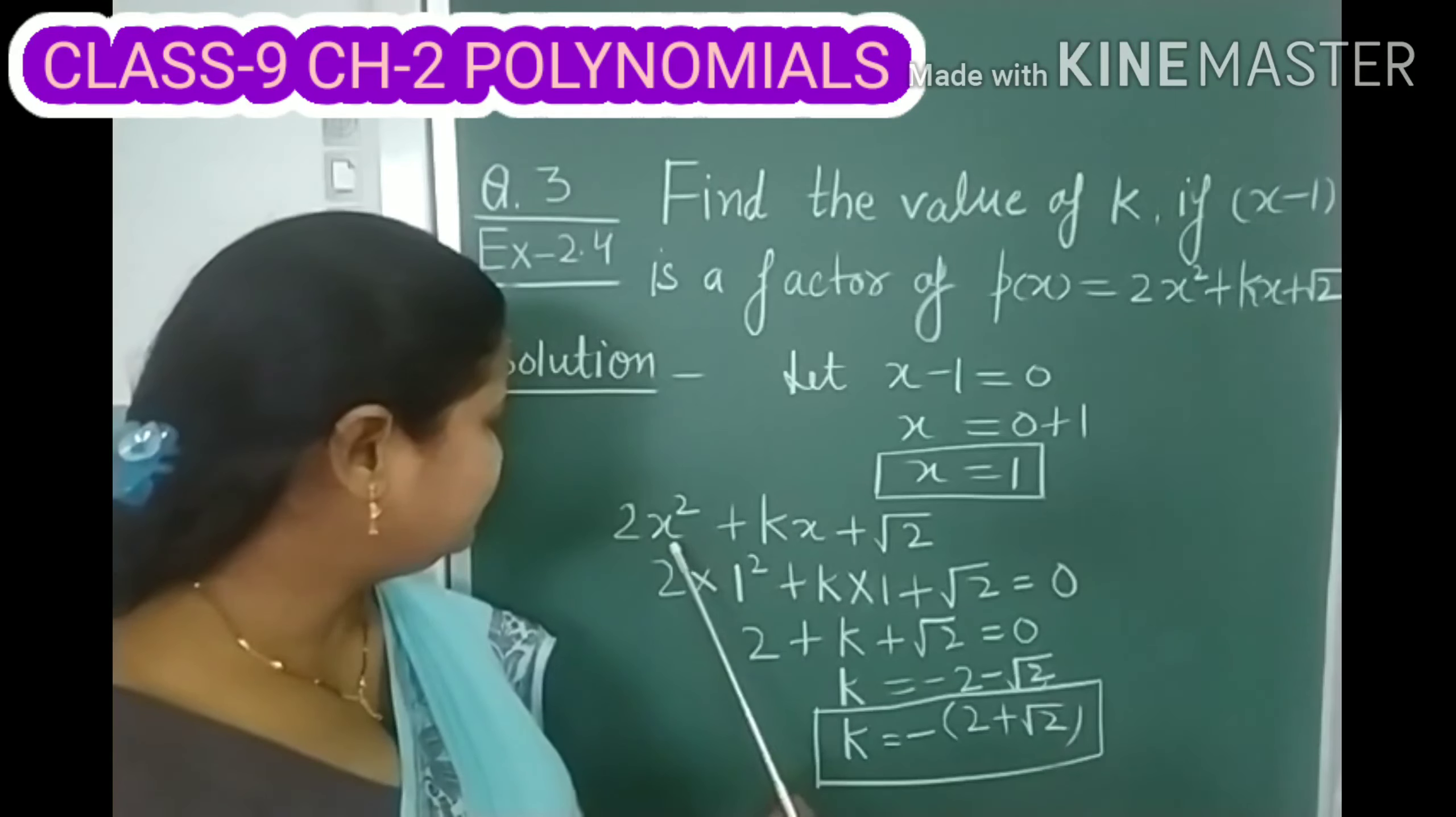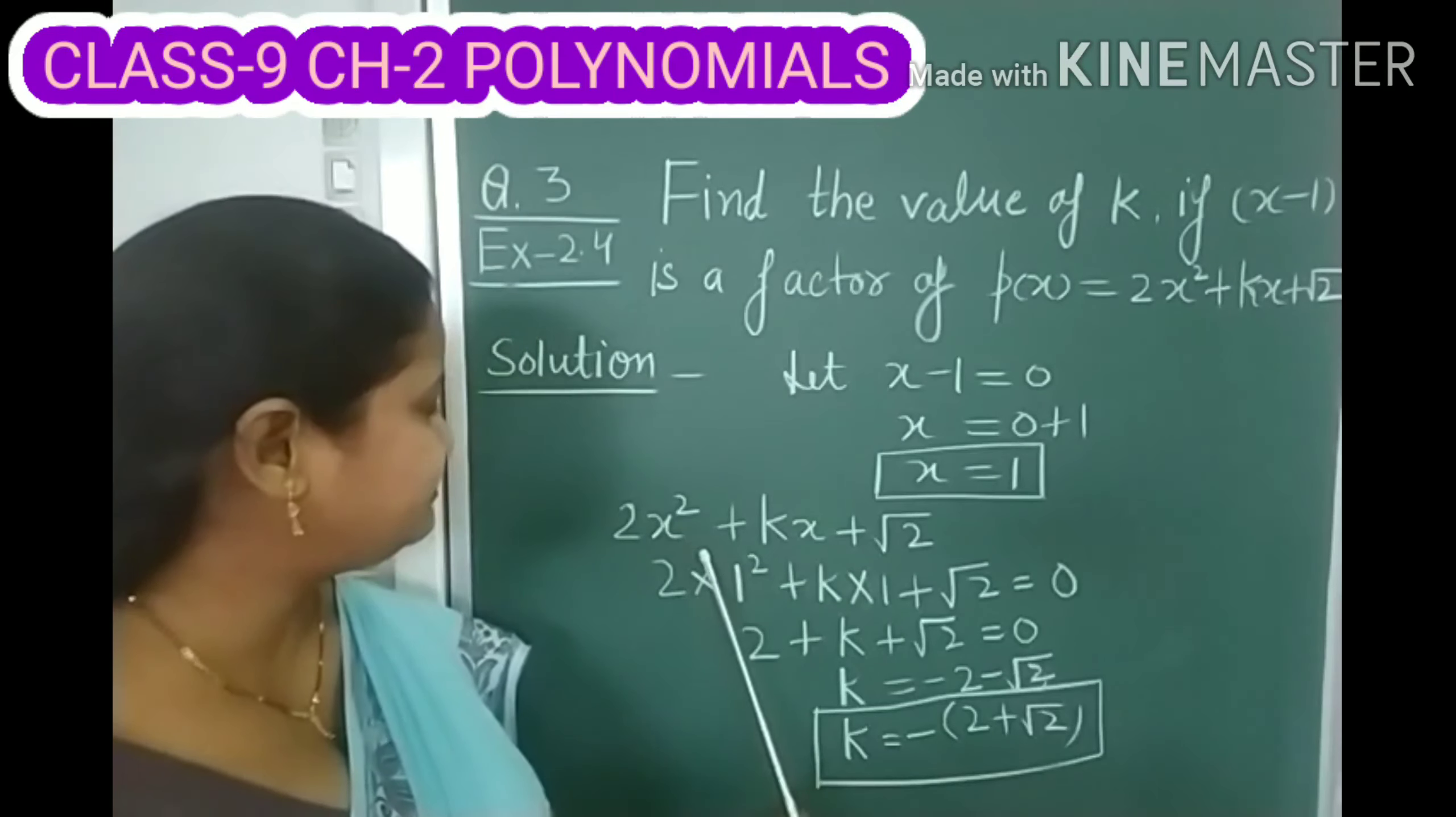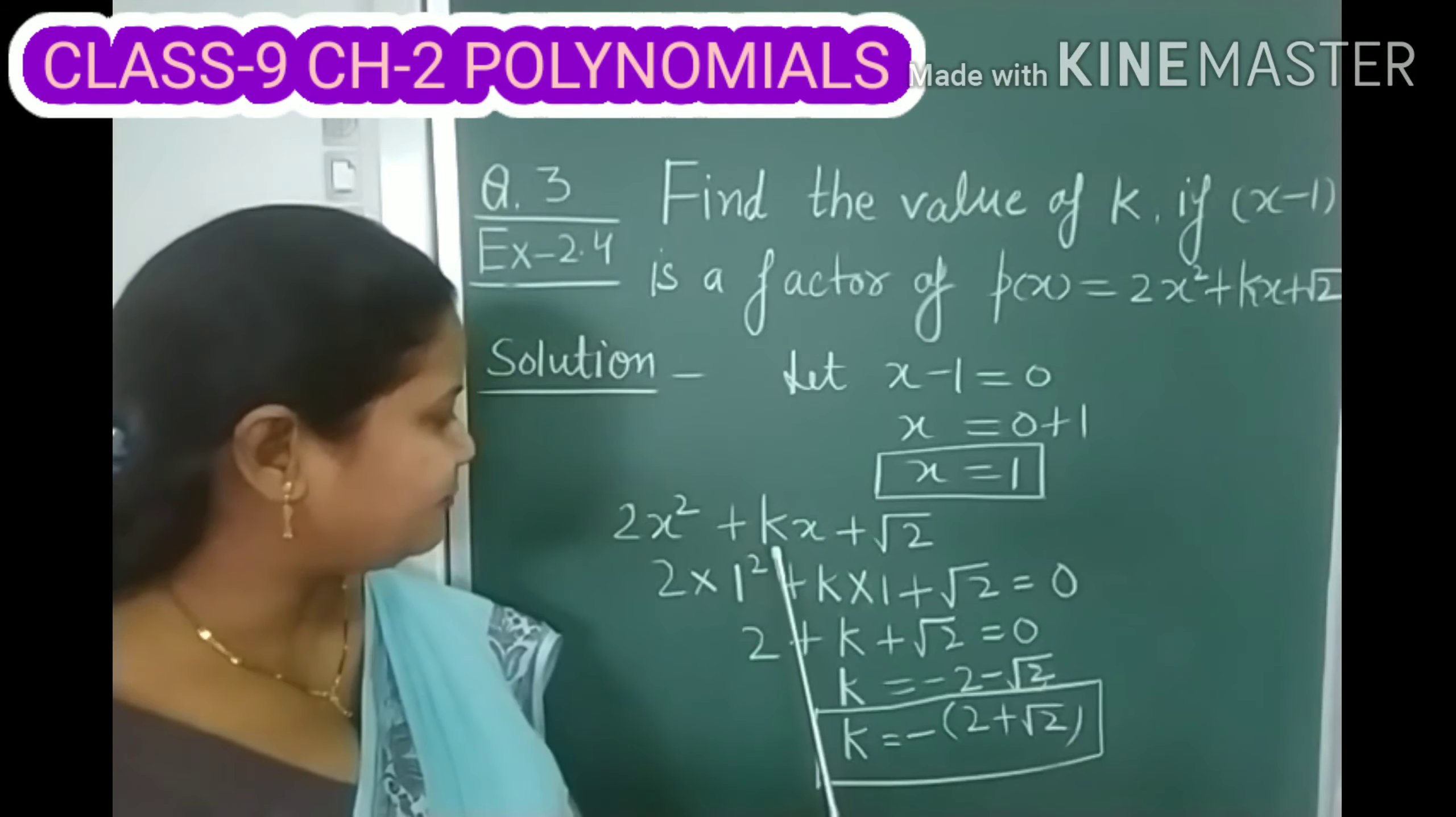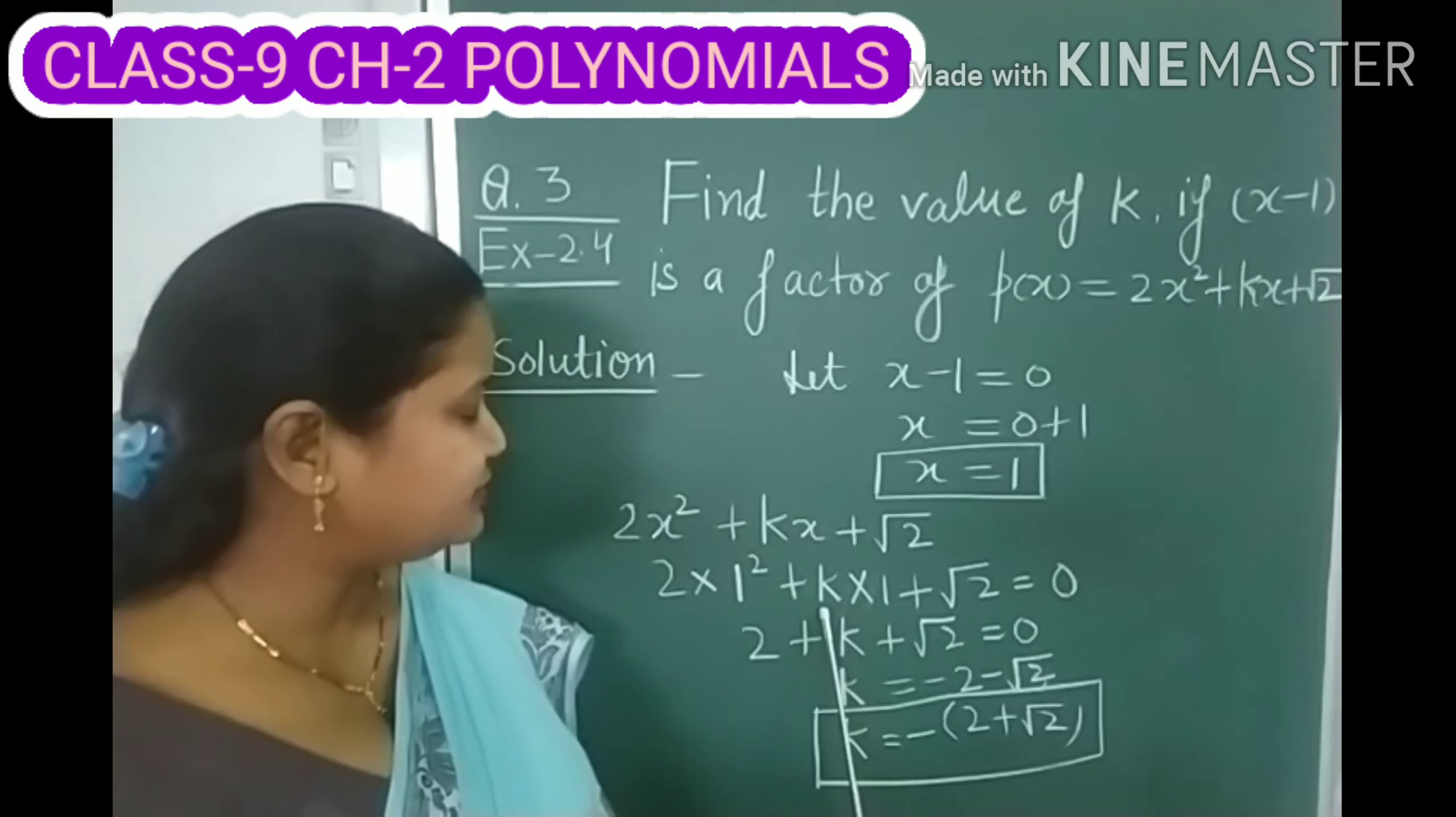Children, here our polynomial is 2X square plus KX plus root 2. So now I substitute 1 in place of X here, then it becomes 2 into 1 square plus K.